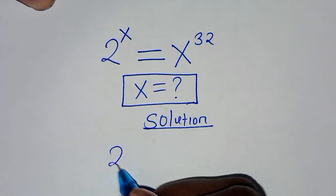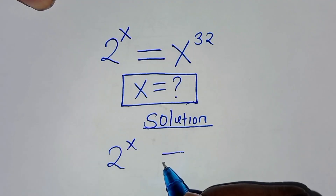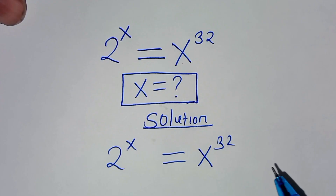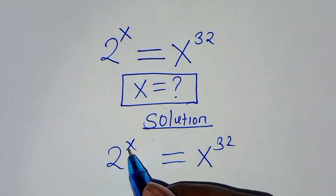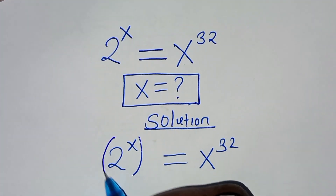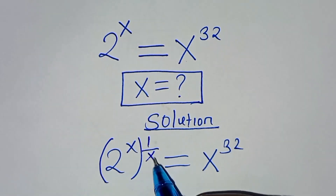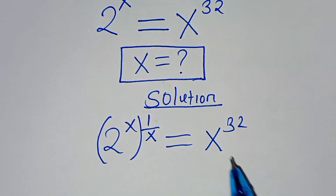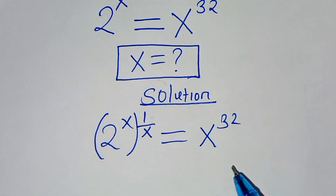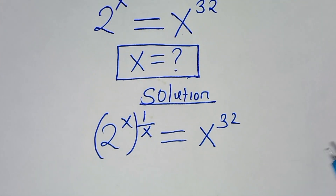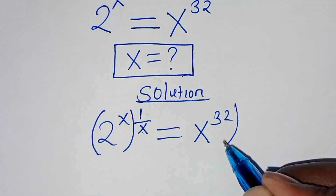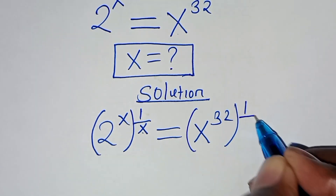We have 2 to the power x equals x to the power 32. The first thing to do is multiply both sides by 1 over x, so we can put the variable x on one side and the constant terms on the other side.